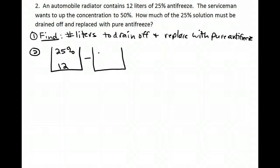What I'm going to subtract is also going to be 25%, because that's what's in there right now. I have no idea how much I'm going to take off, but I'm going to drain some of that 25% antifreeze. Then I'm going to add back pure antifreeze. Now pure antifreeze is 100% antifreeze. How much am I going to add back? Well, I'm going to add back the same amount that I took out. So if I took out x liters, I'm going to add x liters to replace that. What I end up with is a mix, and my mix is supposed to be 50% antifreeze.